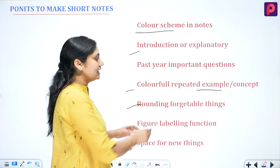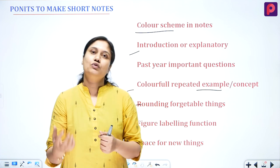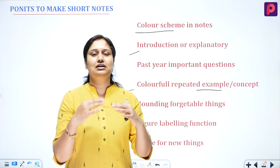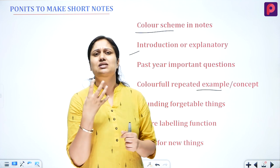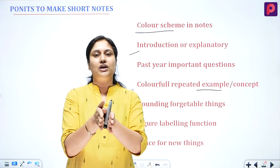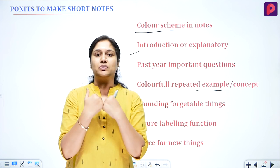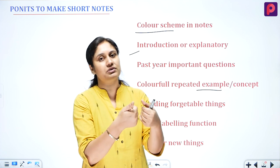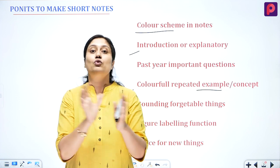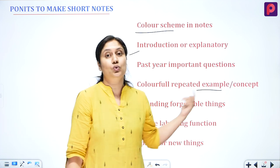Whatever examples or concepts are very important should also be mentioned — for example, studying Botany, you will see mustard is an example used repeatedly for phyllotaxy, inferior ovary, and hypogynous conditions. That example is always important. Also, every student has a different skill level — some basic things are easy but get forgotten. So short notes always need to include things you tend to forget. Whatever forgettable things there are, you have to round them up and write them in your short notes.